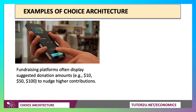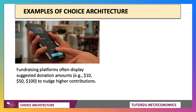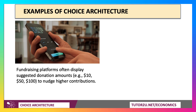Some examples of choice architecture surround us — it's a ubiquitous aspect of behavioural economics. If you think about making donations to charity or fundraising platforms, they often display suggested donations of around $10, $5, $50, $100. What you are presented with can influence your choice. If you lift and raise the three donation amounts to, say, $20, $50 and $100, you might nudge people towards higher contributions.